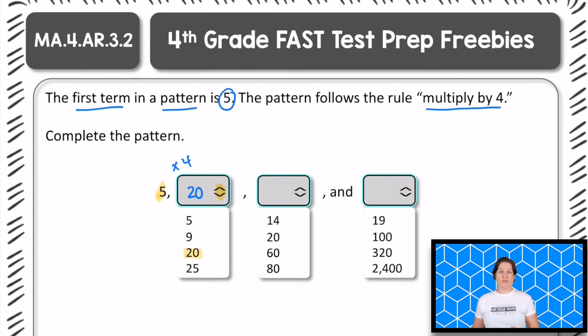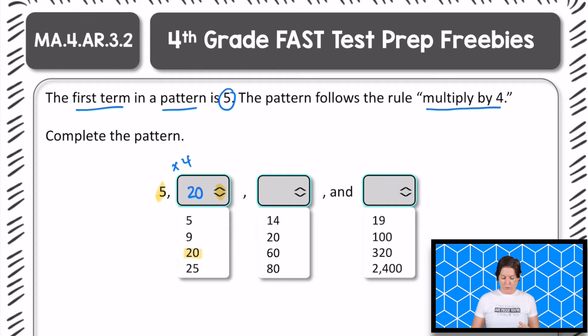Now the next, so 20 is the second term, we need to continue to follow that rule of multiply by 4. So 20 times 4 is what? Yeah, it's 80. So we would click this drop down menu to show us all of our answer choices and select 80.